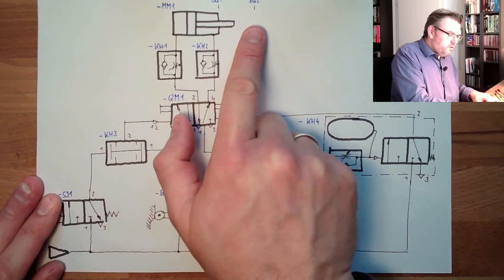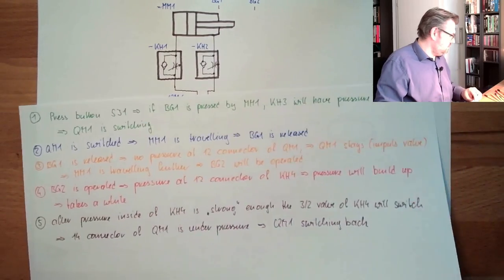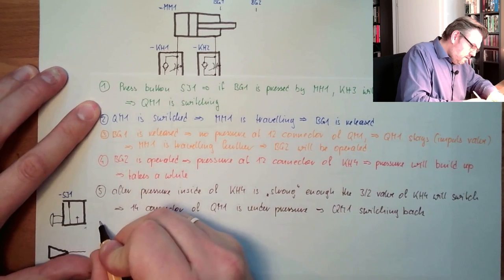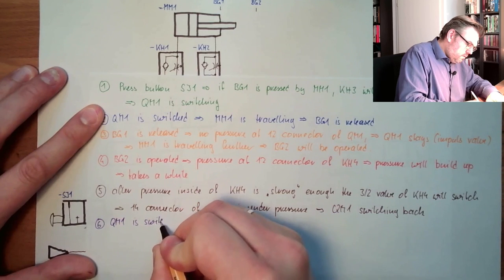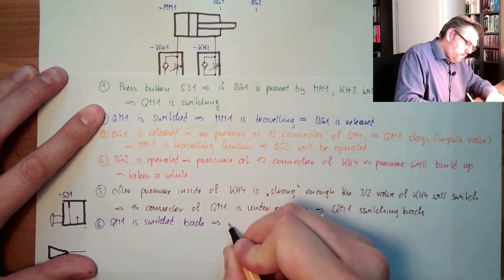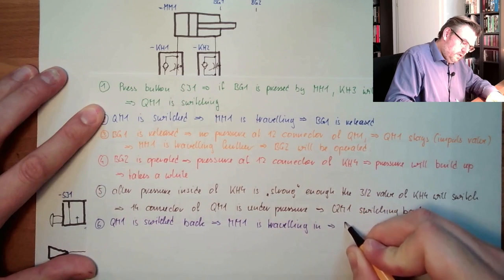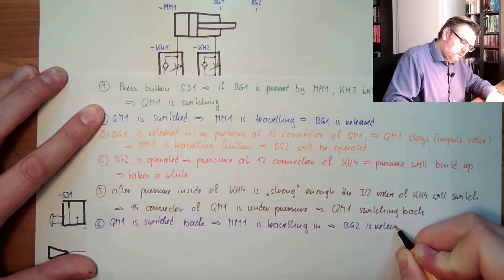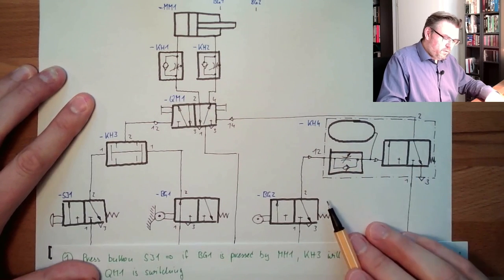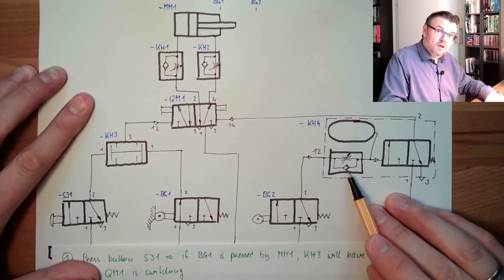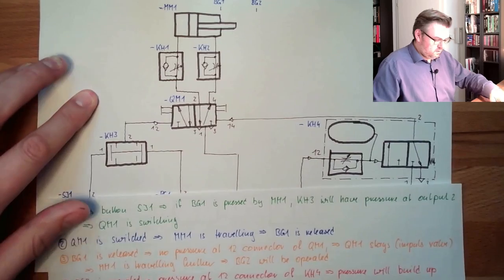QM1 switching back. So back, switching back. The next thing which will happen is, if you look at here, so QM1 is switching back. So we will fill up this, we will release this. So it is traveling away. The next thing which is happening is that PG2 is released. So the sixth thing: QM1 is switched back, MM1 is traveling in. This means PG2 is released.